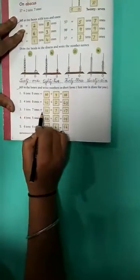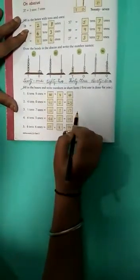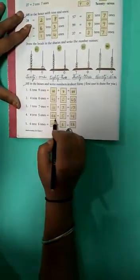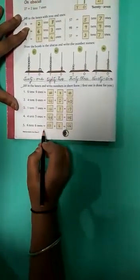1 ten, 7 ones. 1 ten means 10 plus 7, equals 17. 4 tens, 5 ones means 40 plus 5, equals 45. 6 tens, 6 ones means 60 plus 6, equals 66.